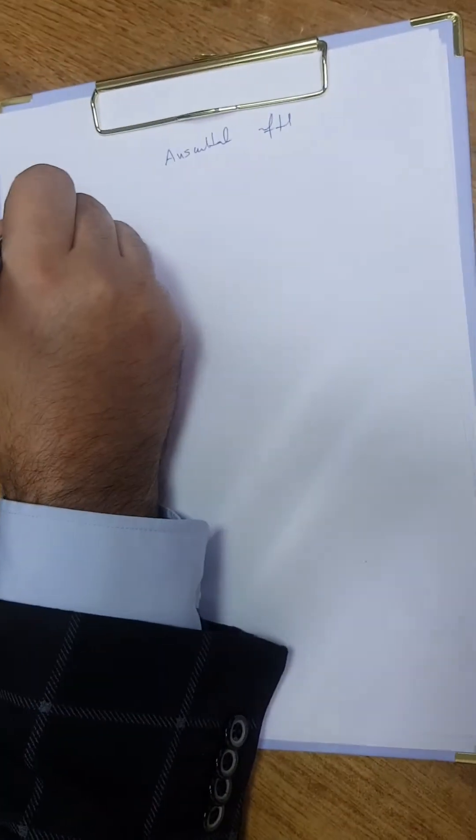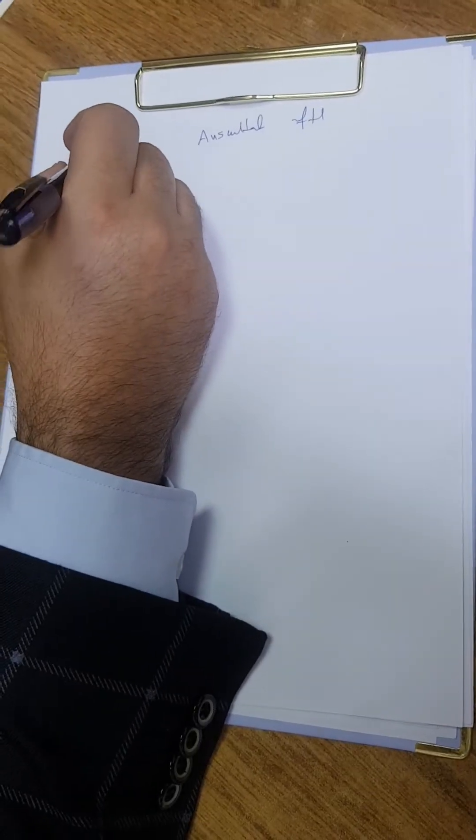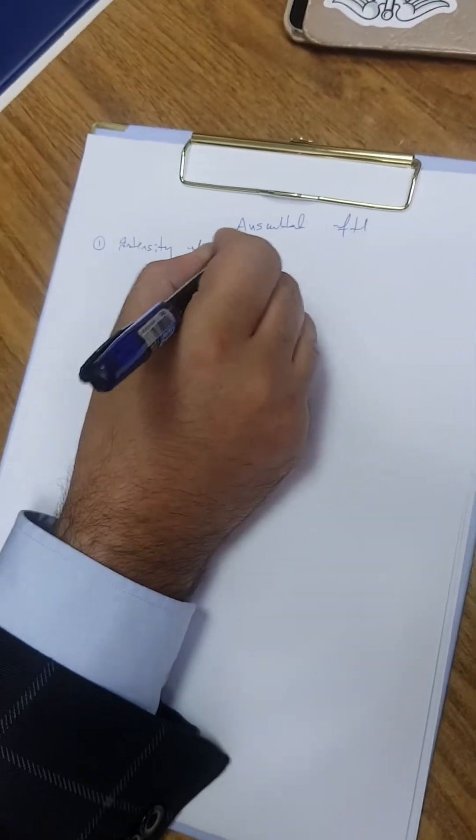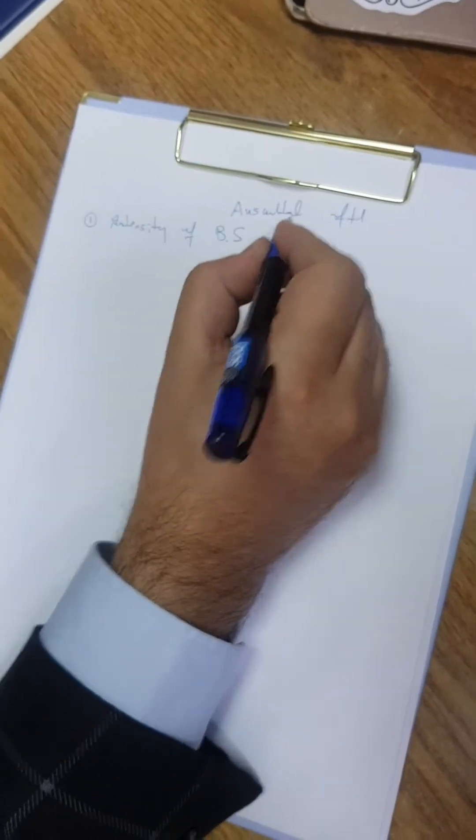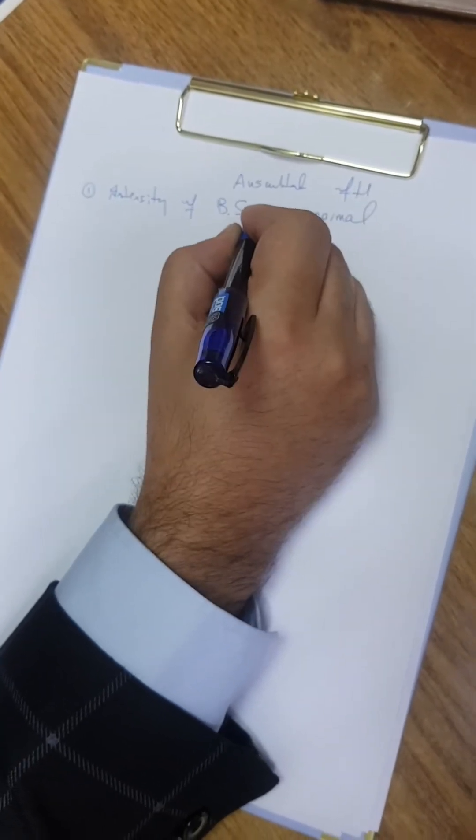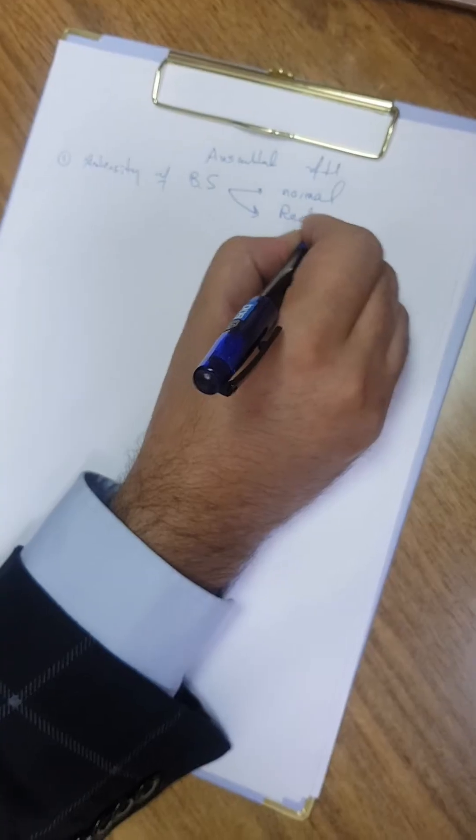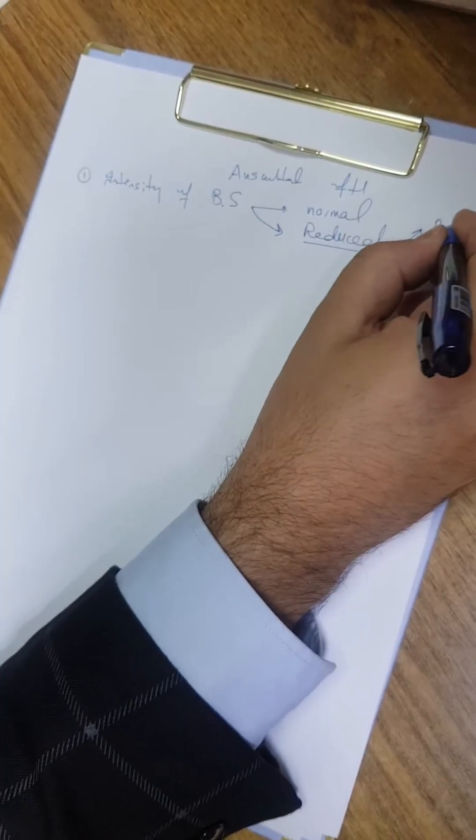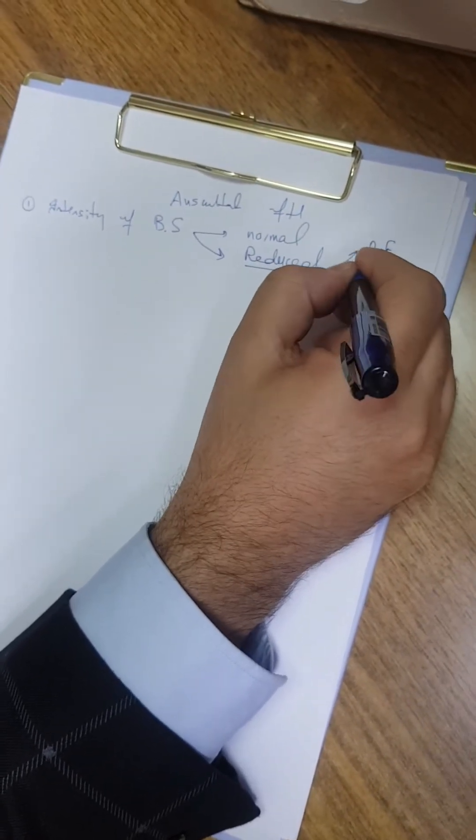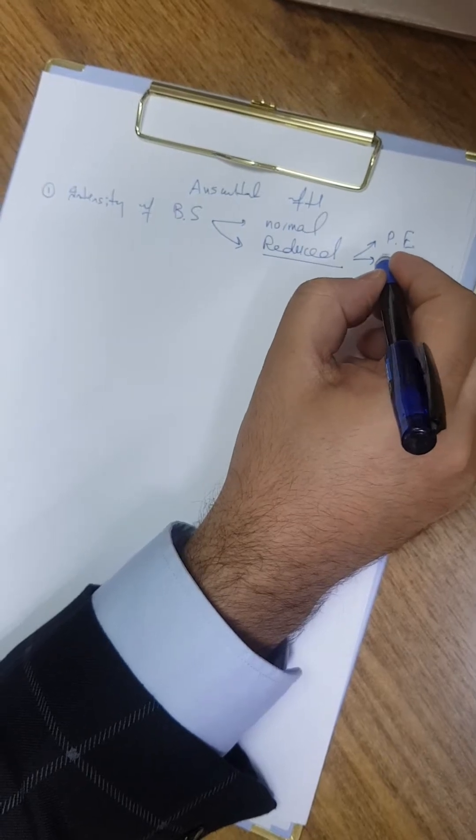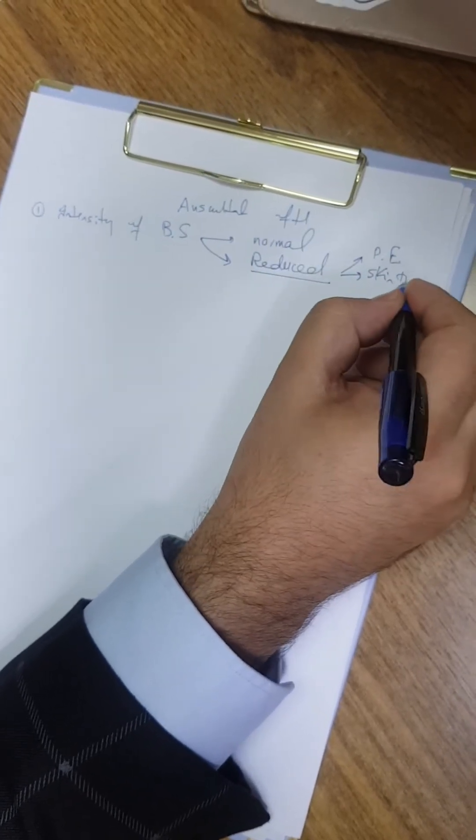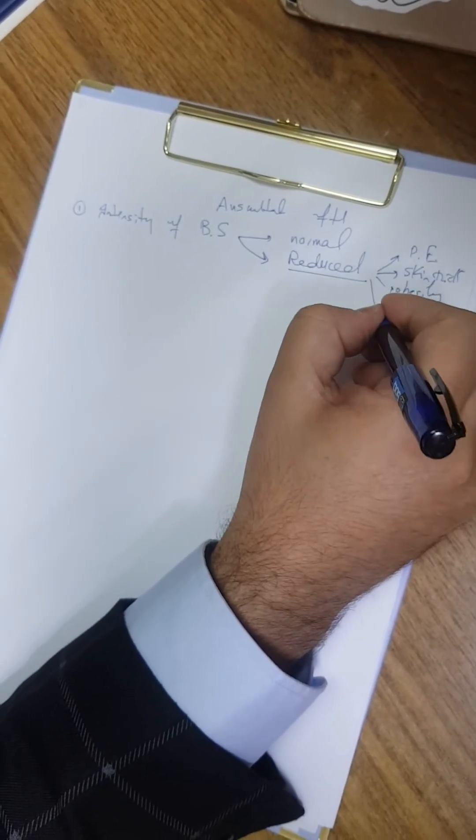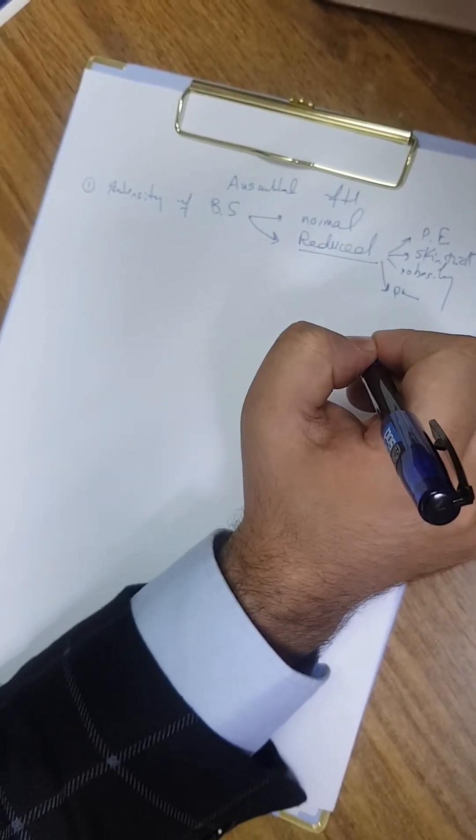Respiratory system - three important topics. First is intensity of breath sounds, either normal or reduced. Causes of reduced intensity of breath sounds include pleural effusion, pneumothorax, obesity with thick skin - all these are causes of reduced intensity of breath sounds.